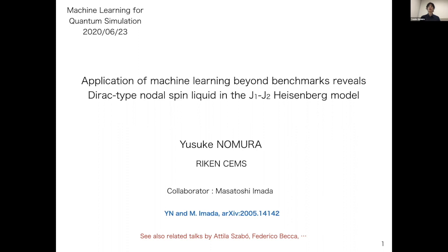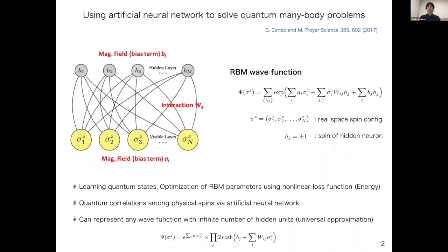My name is Yusuke Nomura and today I'm going to talk about the application to the J1-J2 Heisenberg model. The application of the neural network wave function to quantum many-body Hamiltonians has started from the work by Giuseppe and Matthias, who introduced RBM wave functions.